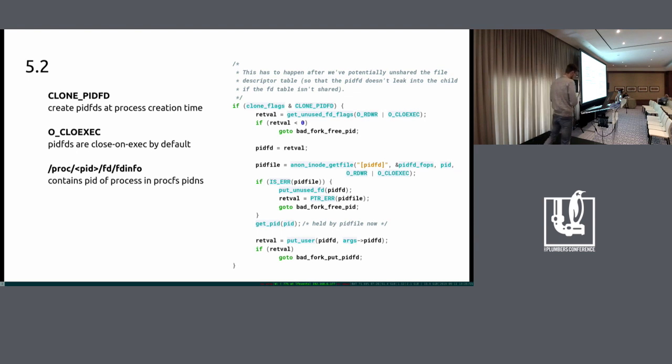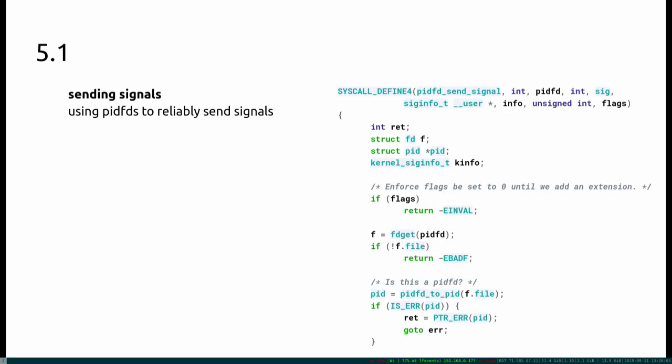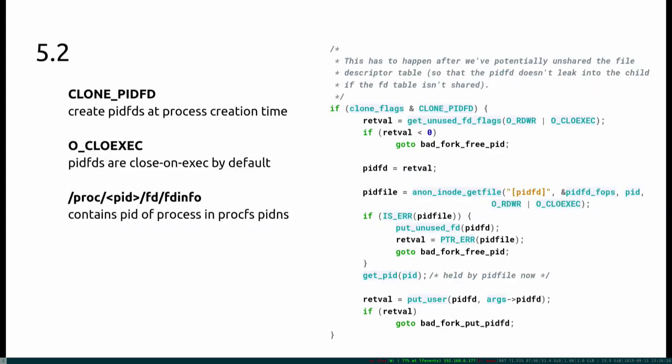Then in 5.2 we landed - it's not the most important bit but I like that piece of code specifically. I talked about code size and the syscall is really small - it lives in kernel/signal.c and looking at the patch, it's really not a complicated syscall, it's not a lot of code. Clone PIDFD: the idea was you want to be able to create processes at creation time.